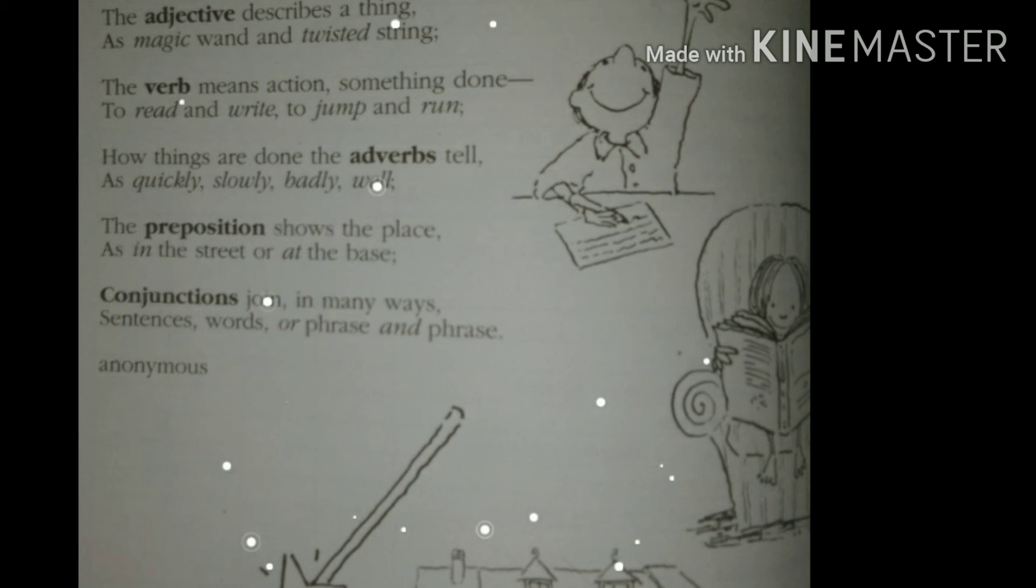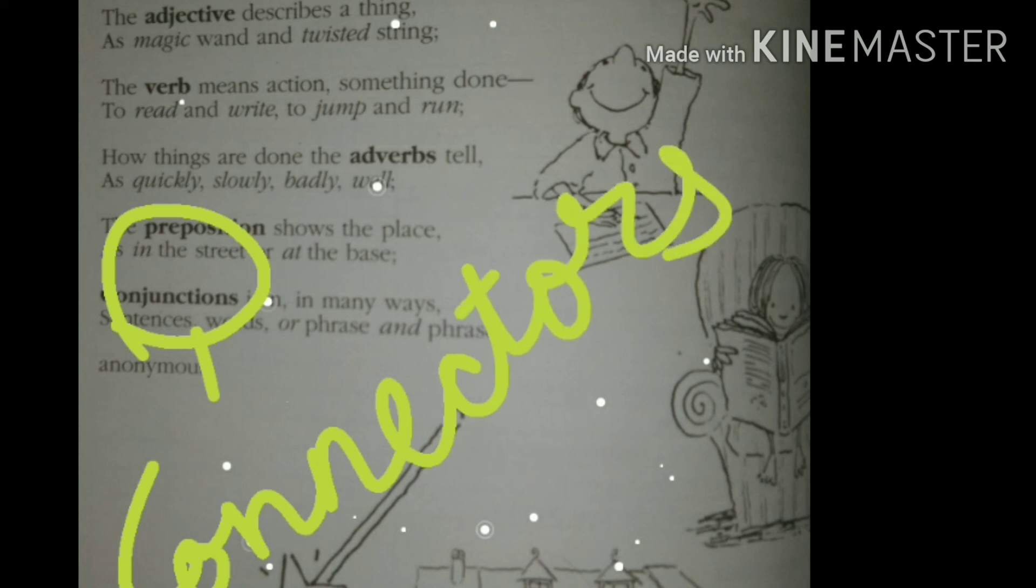Now moving on to the seventh one, that is conjunctions. Conjunctions are also called connectors. They are joining words. They join sentences, words, phrase and phrase. In this sentence itself you get two examples of conjunctions: or and and. So these work as conjunction. The joining words are called conjunction.